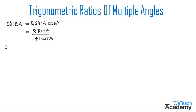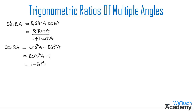Coming to the next trigonometric ratio, cos 2A is equal to cos square A minus sine square A. The formula of cos 2A is also equal to 2 cos square A minus 1, which is also equal to 1 minus 2 sine square A. We can also write cos 2A in terms of tan: cos 2A is equal to 1 minus tan square A divided by 1 plus tan square A.